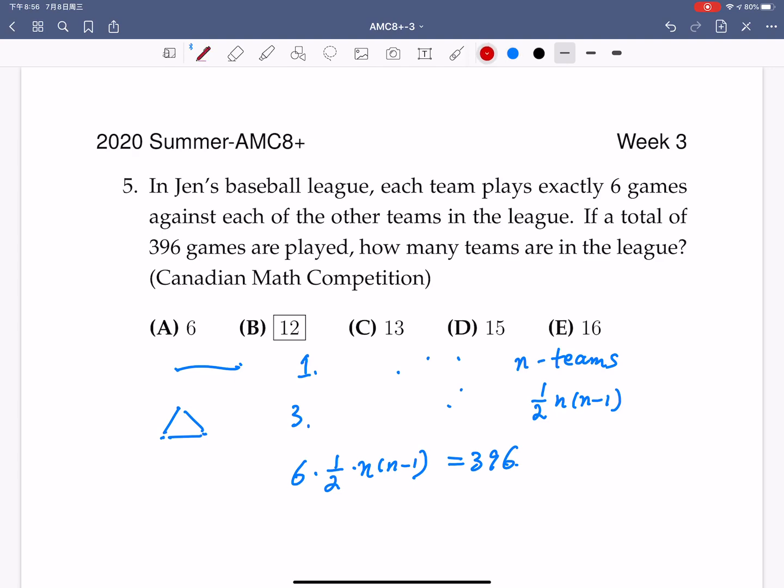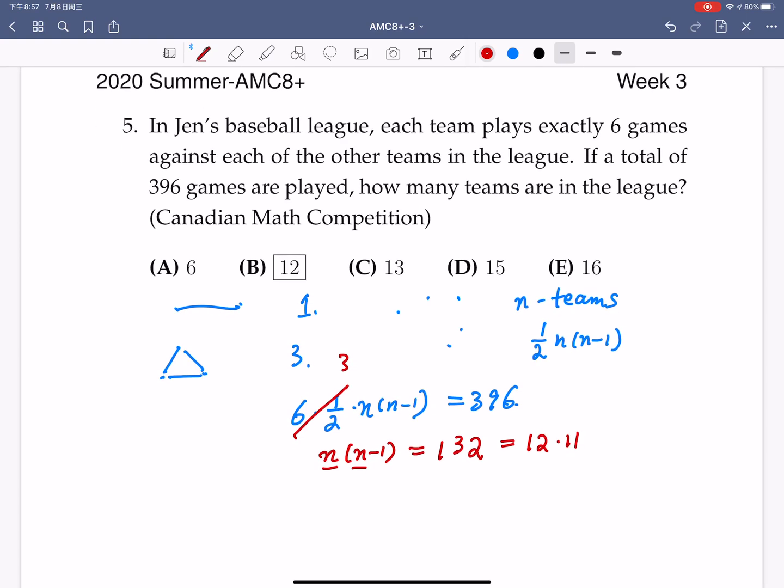Now the assumption is each team plays exactly six games against each other so totally we would have, suppose we have n teams, so totally we would have six times one half times n times n minus one that is equal to 396. So this is going to be 3, so we would have n times n minus one is 132, and 132 is the multiplication of two consecutive integers. So you can easily guess what the answer is because 132 is 12 times 11, so you either solve this quadratic equation or you can simply guess n is equal to 12. And the correct answer is B.